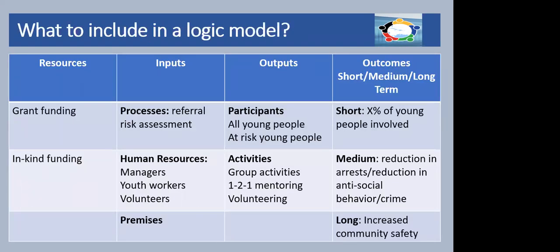So the big question is what to include in a logic model. This is a very simple scheme of the types of things that we might want to put in a logic model. Typically you want to account, in a kind of flow diagram, the resources that you have — which might be the grant funding or any in-kind funding. So what are the funds that you have to start a project? Then you want to look at the inputs, in the fairly standard definition of an input.